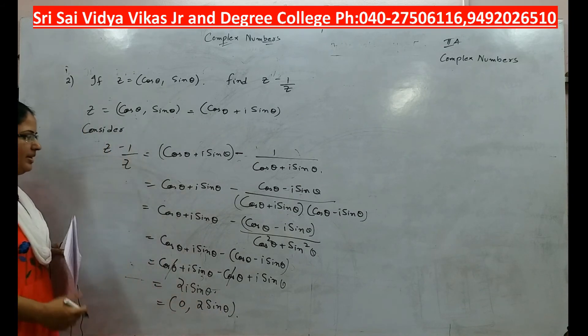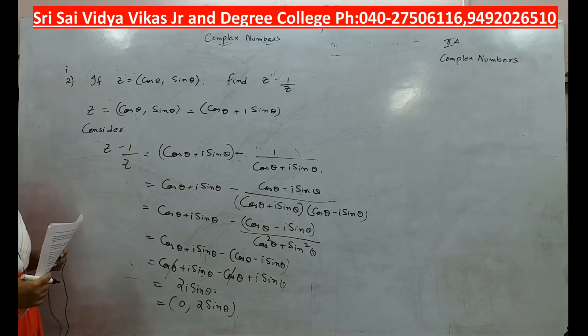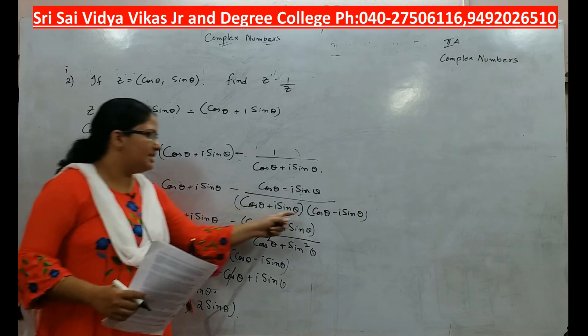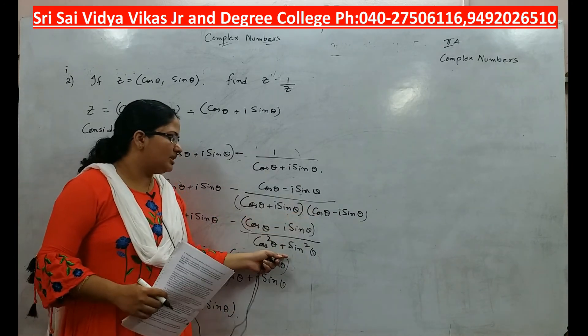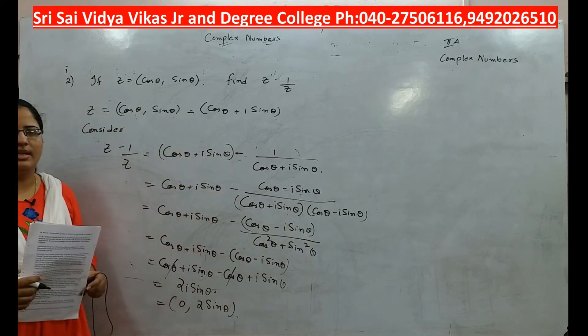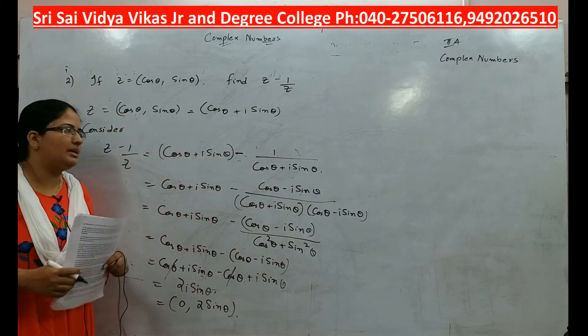This is what we get. If you multiply and check, you will get cos squared θ plus sin squared θ. You can verify it after multiplication.